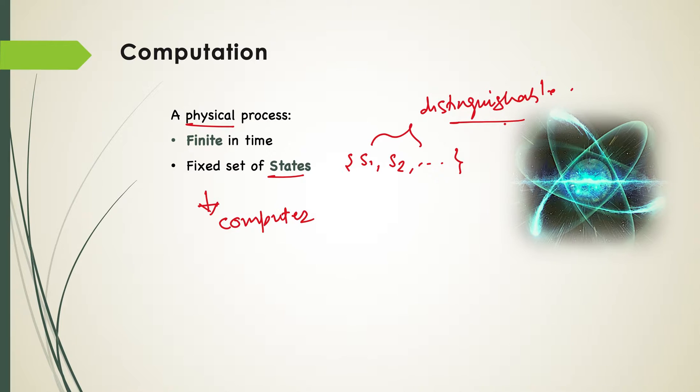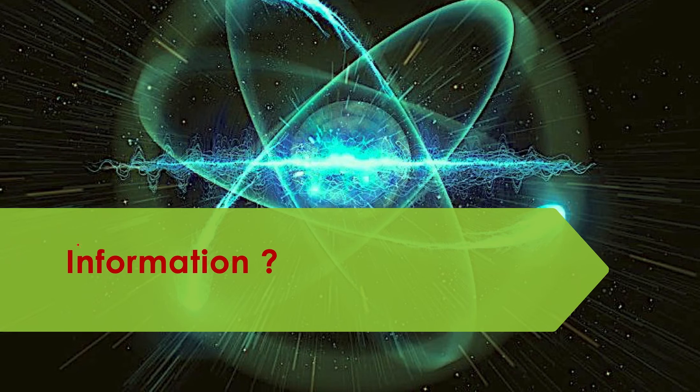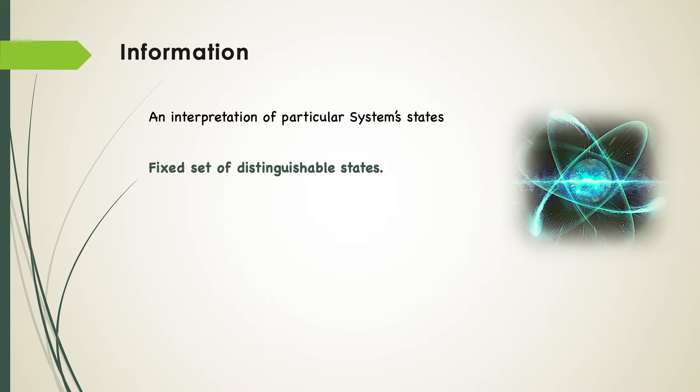It is often said that computation transforms or processes information. So there comes the notion of information. So what is information? Information is an interpretation of a particular system's states. How do we interpret a system's state? That's where information comes into picture.